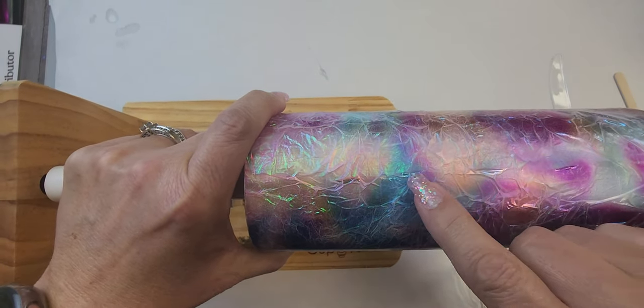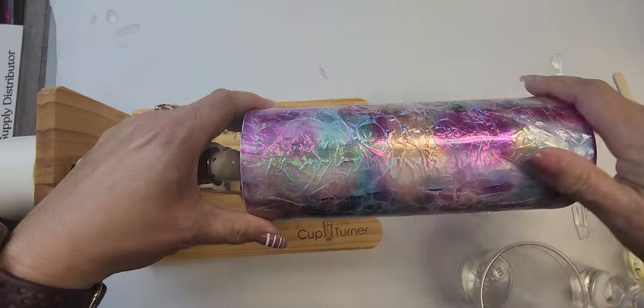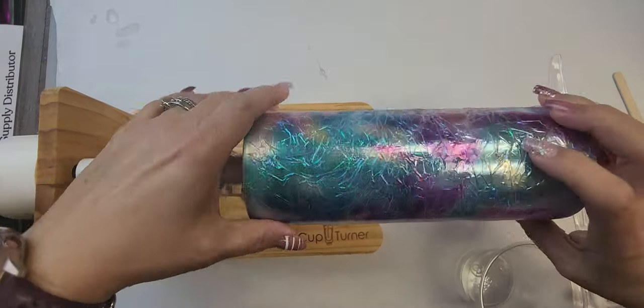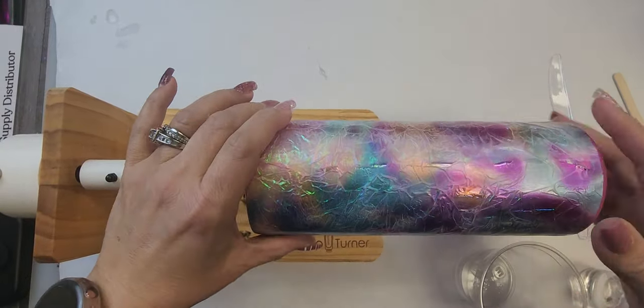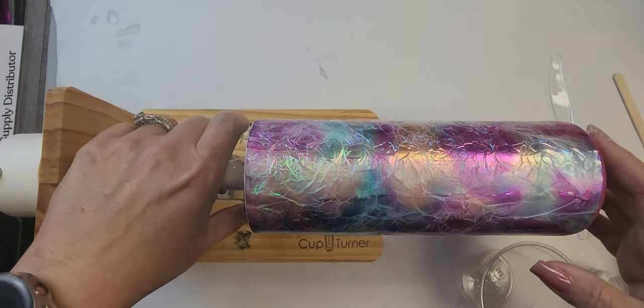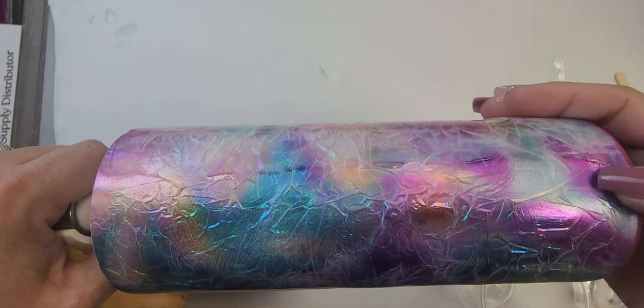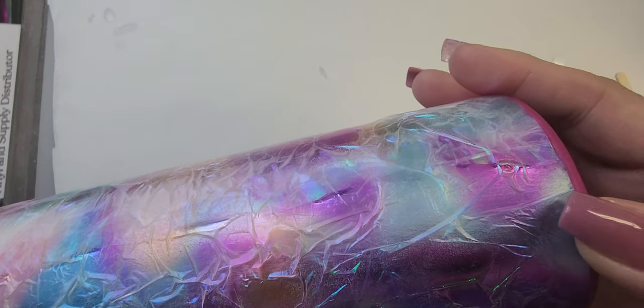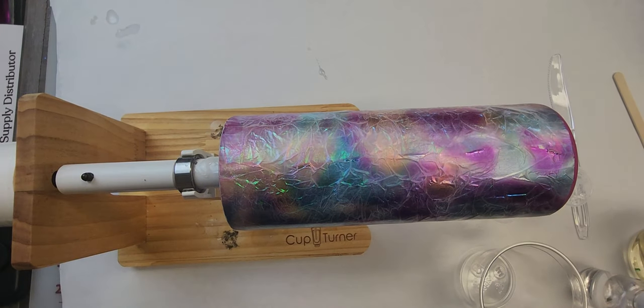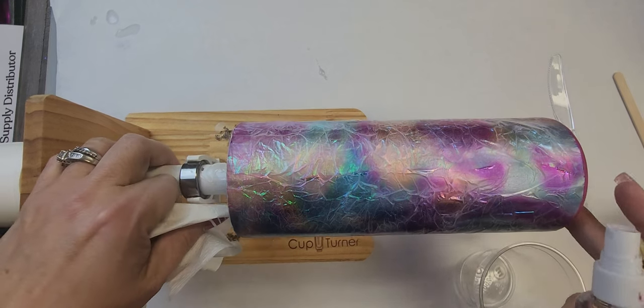You can see little bumps where it lifted up. I sanded down the rough spots. I am going to be using a fast set epoxy, but after you sand you can't really see but there's a little bit of white residue right there and you want to wipe it off with alcohol after you sand it down.